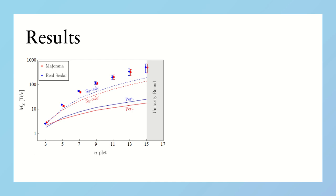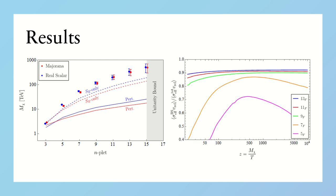As you can see, including the aforementioned non-perturbative effects leads to an increase of one order of magnitude or more of the predicted thermal masses. In particular, for larger multiplets, bound state formation gives the dominant contribution to the annihilation cross-section, as can be seen in this plot.